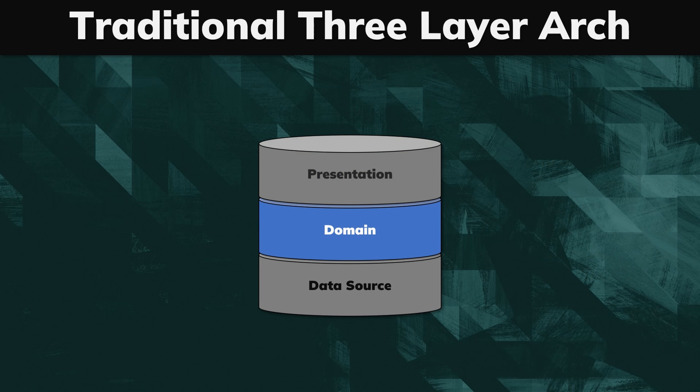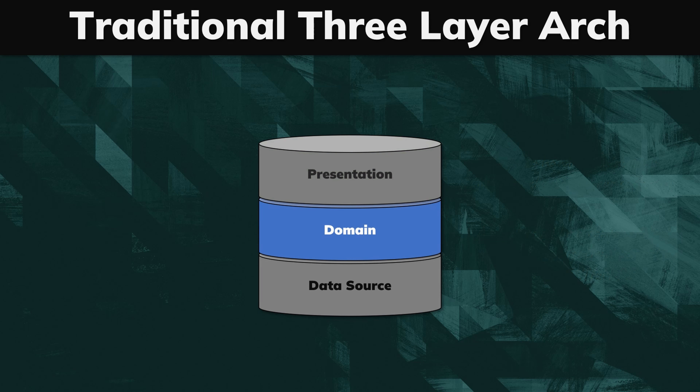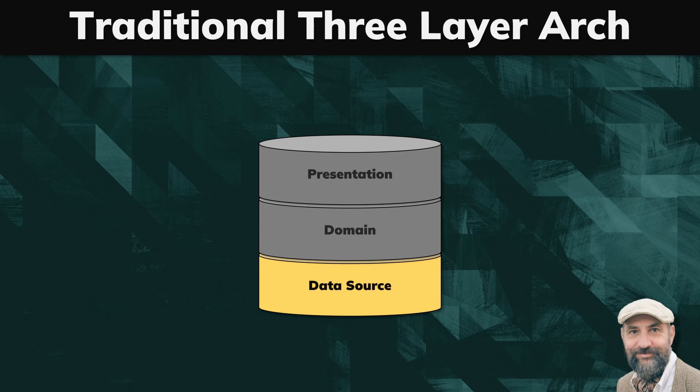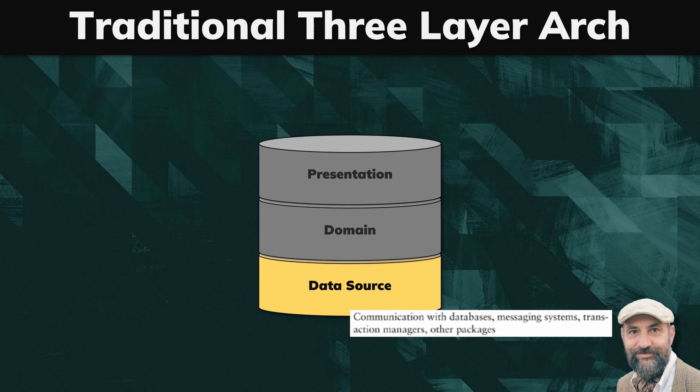In the domain layer we write our business logic. If you've seen my other videos on domain-driven design, this is exactly the layer where you place all the classes defined in your model, such as services, aggregates, entities, and value objects. Finally, we have the data source layer where we deal with communication with other systems.